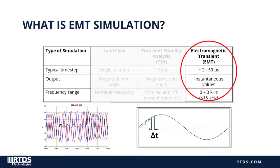The higher the sampling frequency of the simulation, the higher frequency results you can accurately reproduce. The period of the sampling frequency — the distance between two consecutive simulation outputs — is called the time step, or delta t. The typical time step for the RTDS simulator is in the 25 to 50 microsecond range. But if we want to represent high-frequency switching of power electronics, for example simulating converters for interfacing a battery to the grid, we need a smaller time step closer to the 1 to 3 microsecond range.